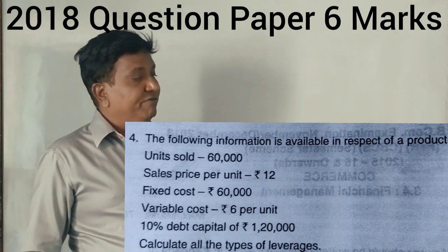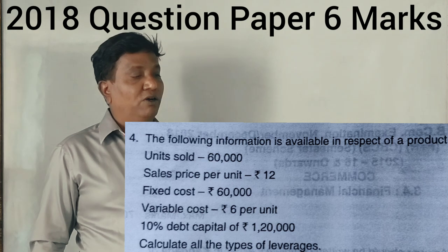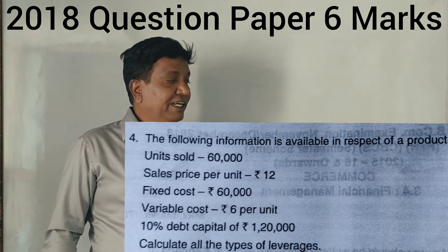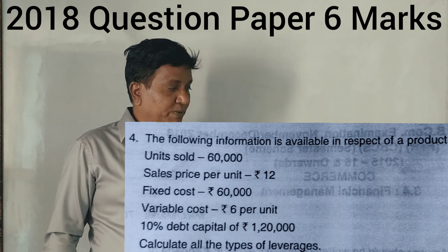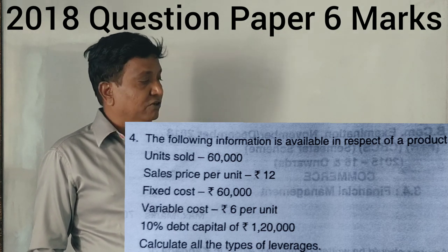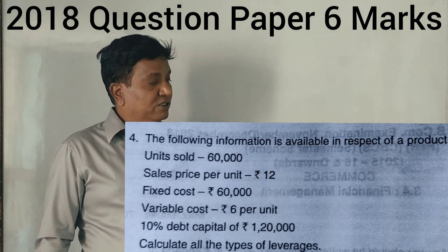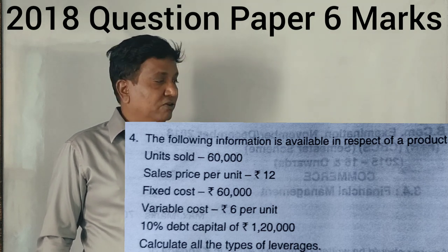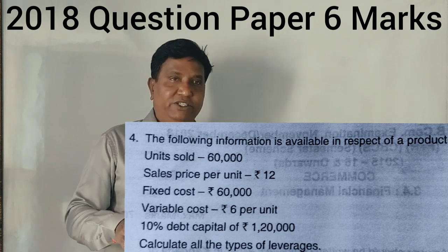I'll read out the question. The following information is available in respect of a product. Units sold is 60,000 units. Selling price per unit is 12 rupees. Fixed cost is 60,000. Variable cost is 6 rupees per unit. 10% debt capital, 1,20,000 rupees. Calculate all types of leverages.